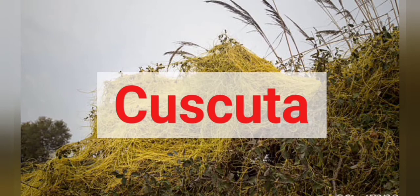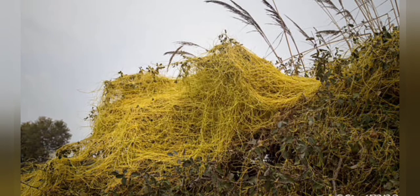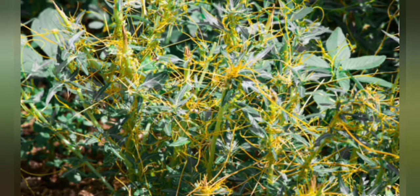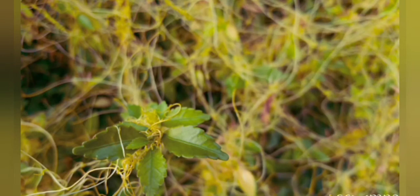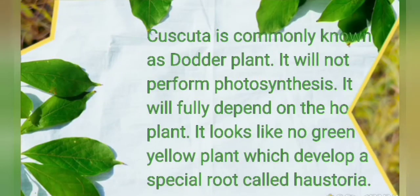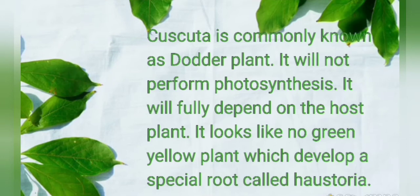Cuscuta plants do not perform photosynthesis and completely depend on their host for nutrition. Such plants look like non-green, thread-like yellow plants which develop special small roots called haustoria. This helps to absorb water and nutrition from the host. Cuscuta is commonly known as the dodder plant and will fully depend on the host plant.